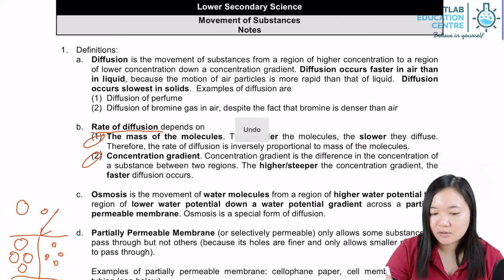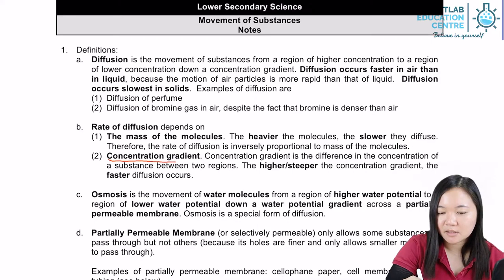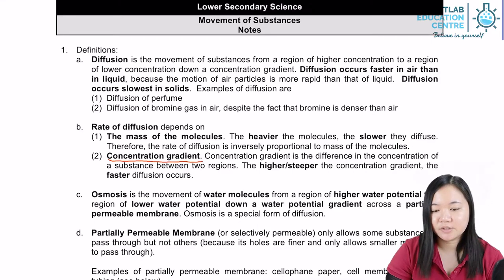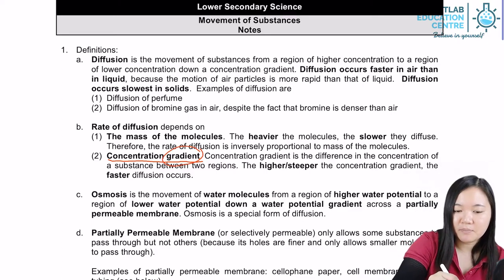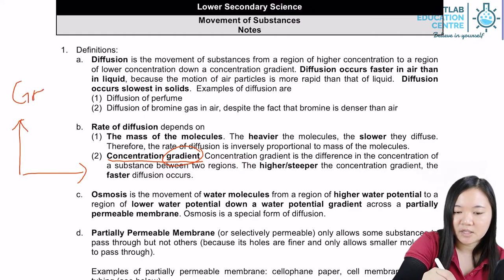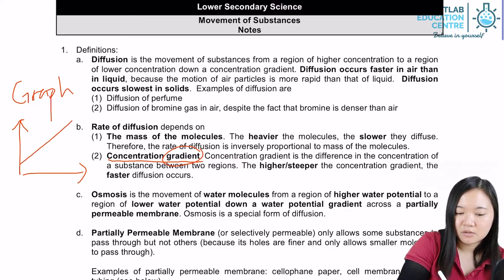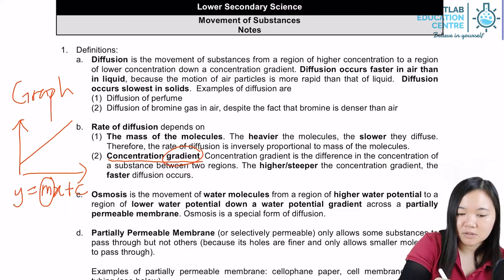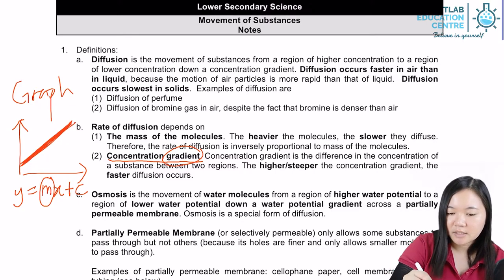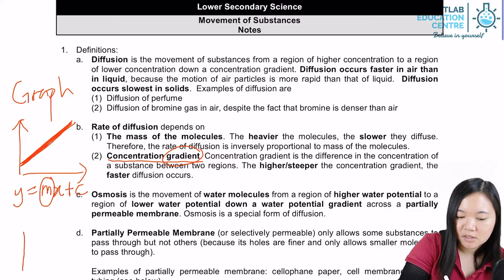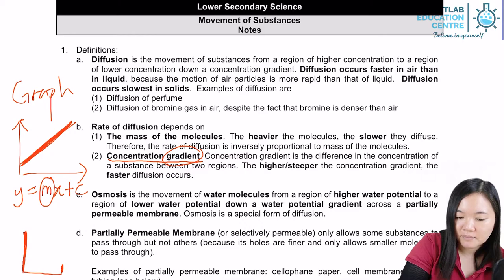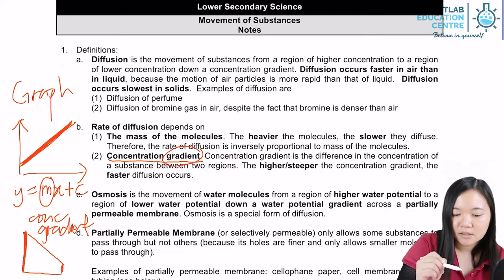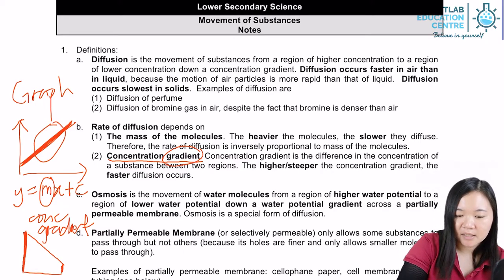Next, let's look at concentration gradient. Concentration gradient refers to the difference in concentration. Think of it like gradient in maths — you have y = mx + c, where m is the gradient, representing the steepness of the line. If one region has a lot of particles A and another region has very few, connecting them gives you a gradient — that is why we call it the concentration gradient.